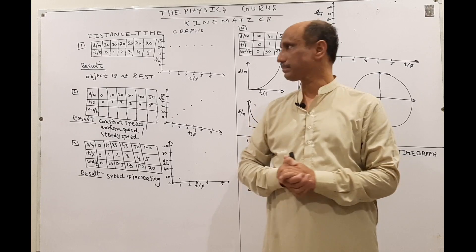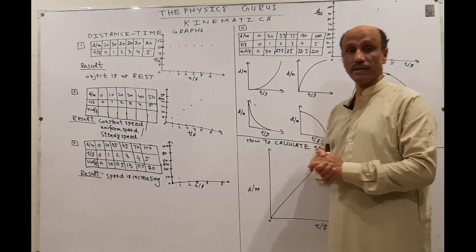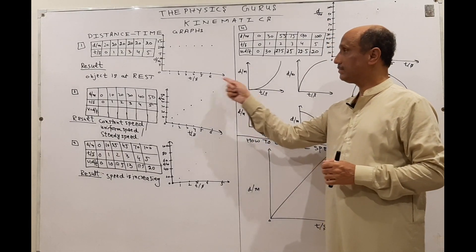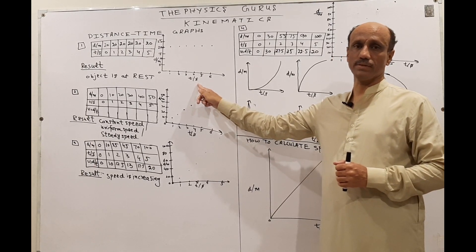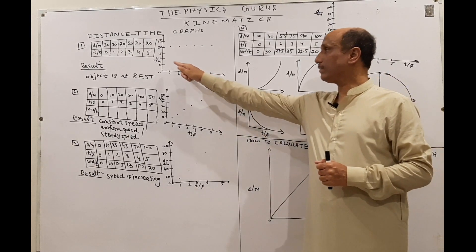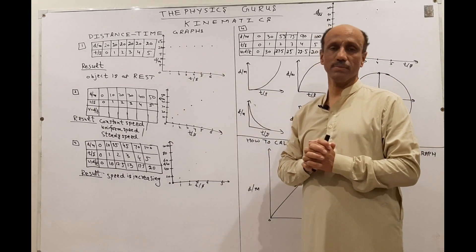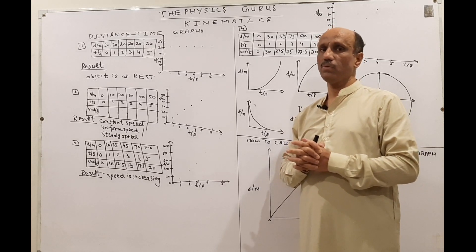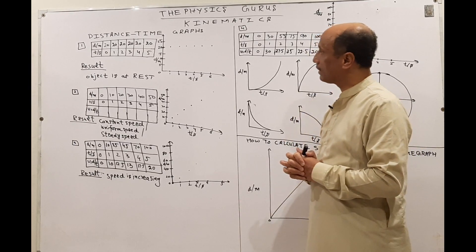In the distance-time graph, the first thing is that you have to label the axes. On the x-axis you will write down 'time' with its unit, and similarly on the y-axis you will write down 'distance / meter.' If you do not write down the unit, one mark will be deducted from your answer.